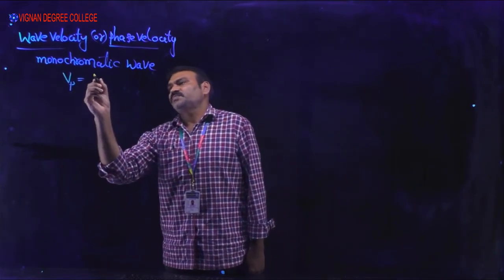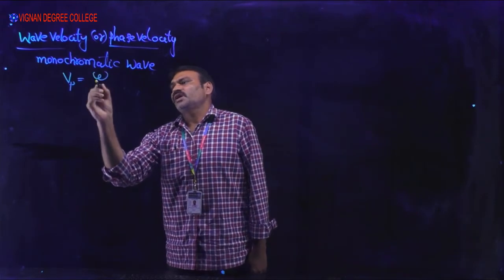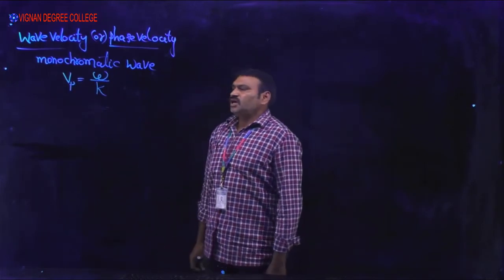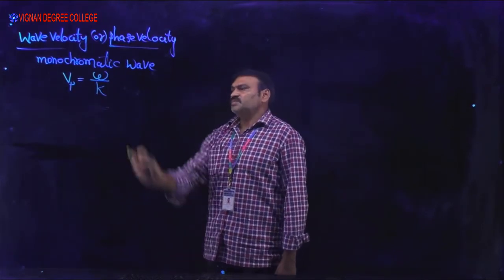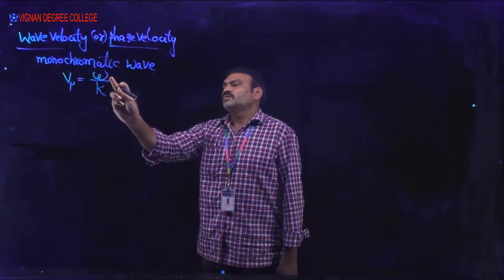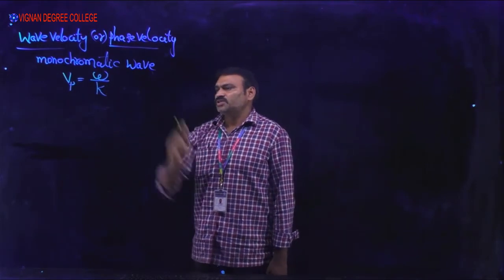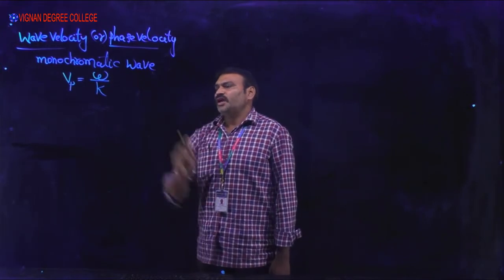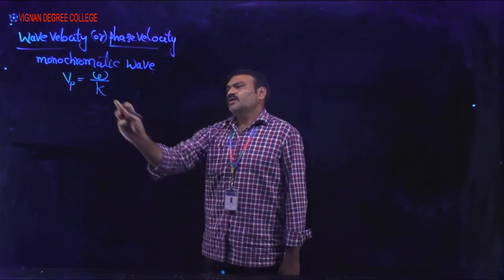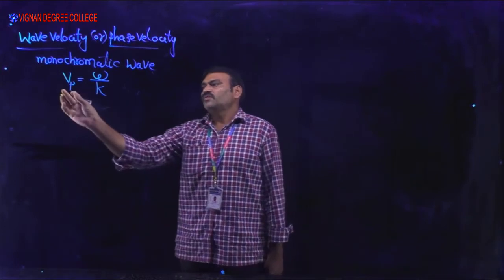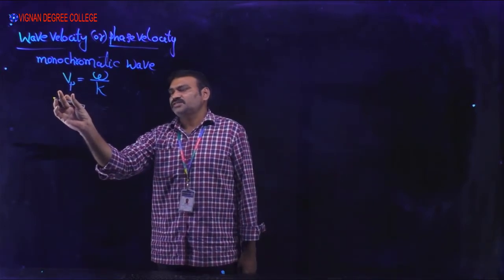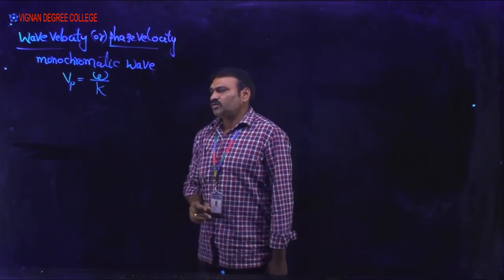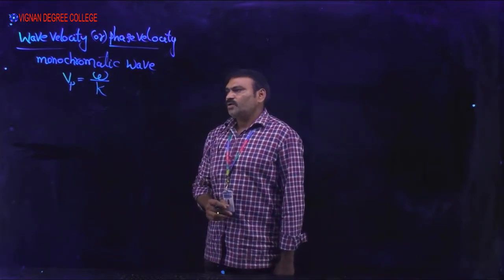V suffix P is equal to omega by k. Phase velocity is also defined in terms of angular frequency and propagation constant, where omega is the angular frequency and k is the propagation constant. So phase velocity is defined as the ratio of angular frequency to the propagation constant.